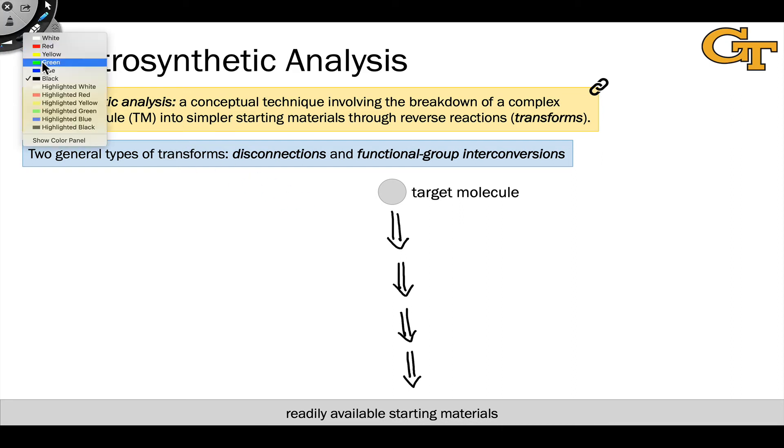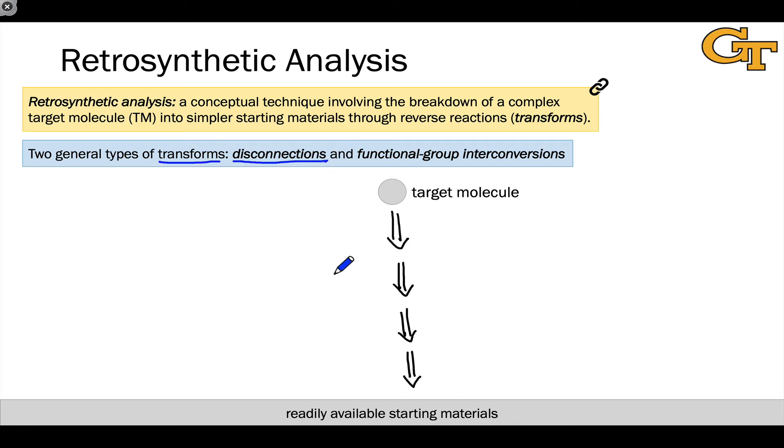And in thinking about the different ways in which we might work backwards, I want to draw your attention to two different types of transforms that we can think about. They're called disconnections, which are really the simplifying, the reverse direction transforms that move us from a complex structure to a simpler one, and functional group interconversions.